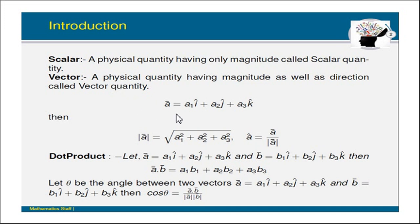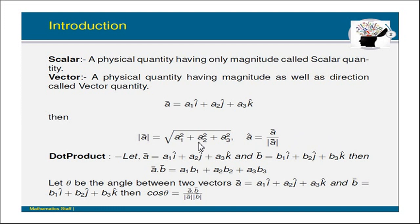Let's take vector a-bar equal to a1 i-bar plus a2 j-bar plus a3 k-bar. Note the notation here — when typing, I use i-cap, j-cap, k-cap, but it is also called i-bar, j-bar, k-bar. Its magnitude is given by: magnitude of a-bar equals the square root of a1² plus a2² plus a3². Its direction is found by a-cap equals a-bar divided by mod of a-bar.